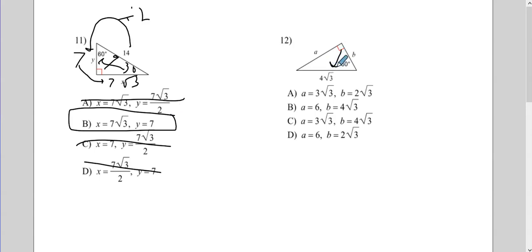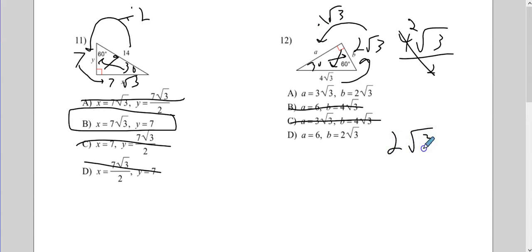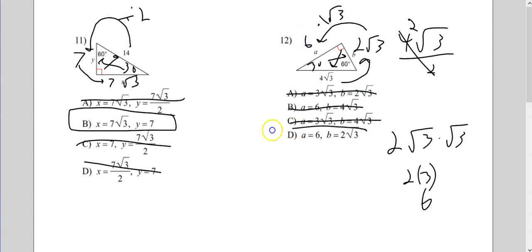This one's a little trickier. I have the hypotenuse and always want to go to the short side first — that's B, opposite the 30. Divide by 2: 4 radical 3 divided by 2 is 2 radical 3. So B is 2 radical 3, and that's either A or D. To go to the longer side, multiply by radical 3: 2 radical 3 times radical 3 — radical 3 times radical 3 is 3, making the longer side 6. That rules out A, so my answer is D.